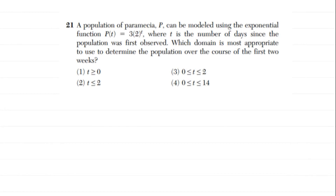For number 21, we're given an exponential function representing the population of paramecia, where t is the number of days since the population was first observed. The question asks which domain is most appropriate to determine the population over the course of the first two weeks. The domain is all values of our independent variable — in this case t. For time problems, time almost always starts at zero; it almost never makes sense to have negative time.